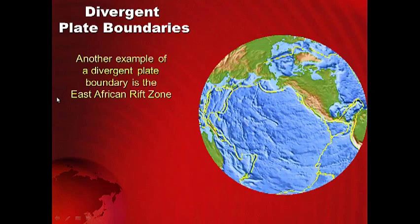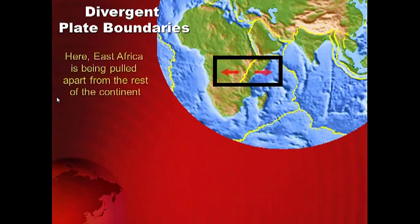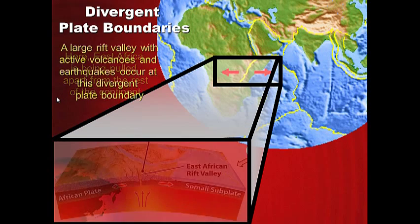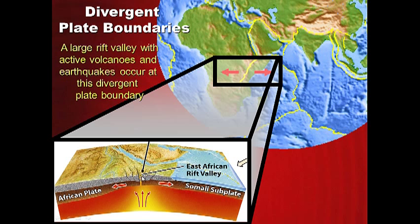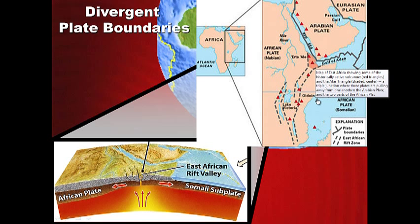Another example of a divergent plate boundary is the East African Rift Zone. East Africa is getting pulled apart — the plates are pulling apart. If we take a slice through Earth, we can see the East African Rift Valley, where the floor is sinking. The Somali plate and the African plate are pulling apart and magma is coming up. You can see volcanoes in East Africa — one way you know there's a plate boundary. As this plate gets pulled apart, water is filling in, and millions of years from now, East Africa is going to be ripped away from the rest of the continent.